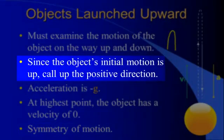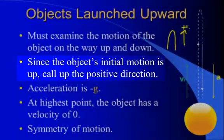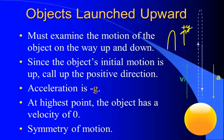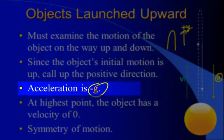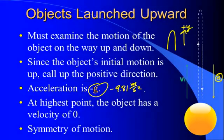Because the object's initial motion is up, we're going to call up our positive y direction. That means since positive y points up and the acceleration due to gravity is down, they point in opposite directions, so our acceleration is going to be negative g or negative 9.81 meters per second squared. Also, at its absolute highest point — when the object reaches the peak of its motion — our velocity is going to be zero, giving us one other item that we know in these problems.